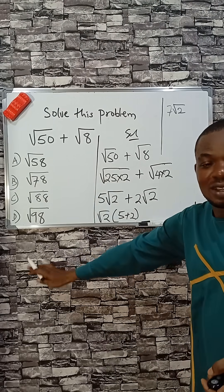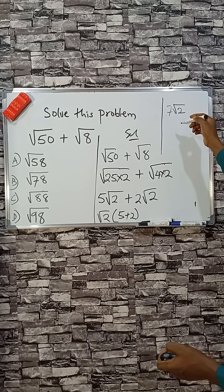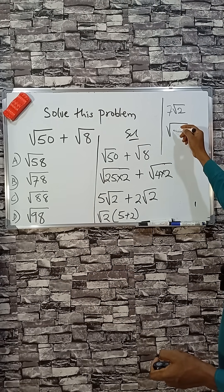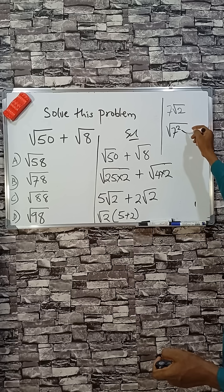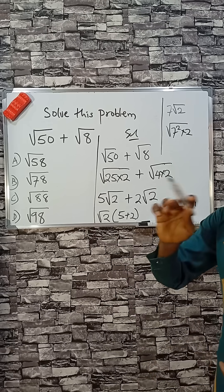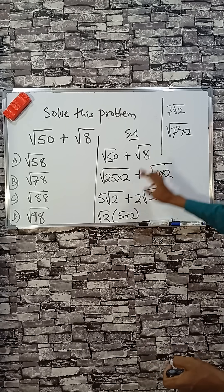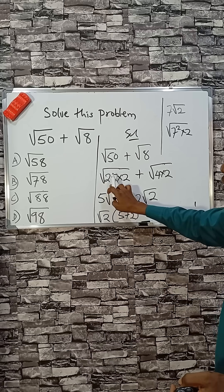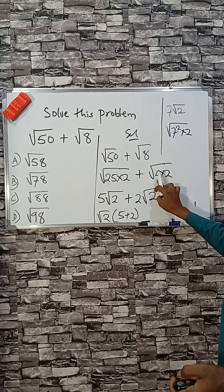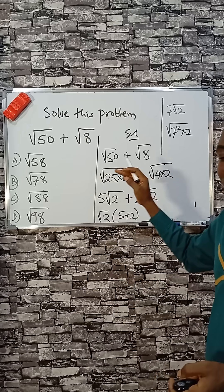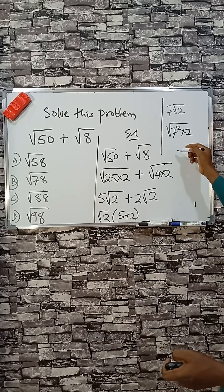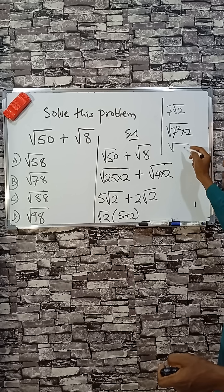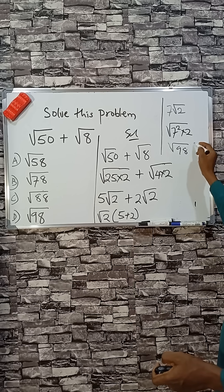But the answer isn't fully simplified yet. Look at the board — we can write 7 root 2 as the square root of 7 squared times 2. The reason for squaring the 7 is because we earlier took the square root of 25 and 4. So 7 times 7 is 49, and 49 times 2 is 98.